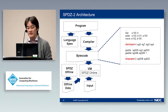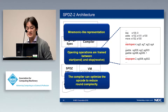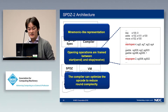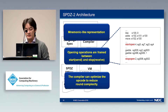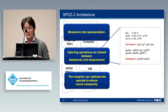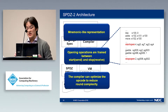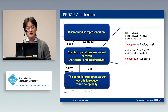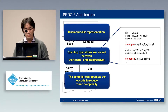The bytecode after compiling the program is described in a MEMO-like representation, where each instruction has an opcode and operands. Several MPC operations require communication — in particular, the opening operation, which means reconstruction in secret sharing. In SPICE bytecode, all opening operations are framed between start and stop instructions, and independent instructions that can be processed in parallel to the communication are placed between the start and stop operations. The compiler can also optimize opcodes to reduce the round complexity in terms of number of communications.